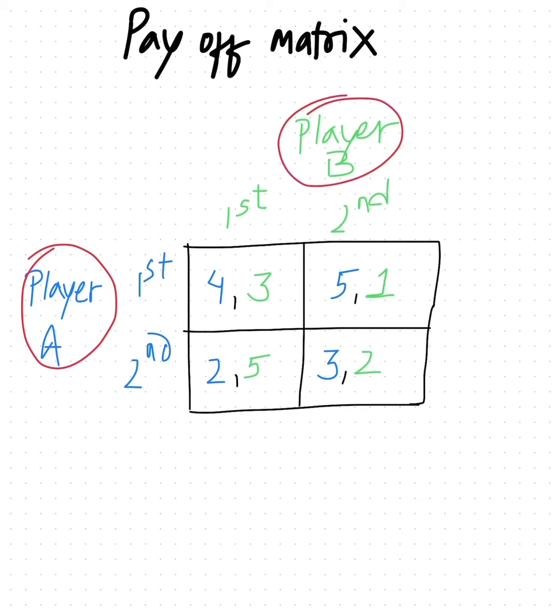We've got two players here: Player A and Player B. Both players have two strategies available to them. Player A has first and second strategy; likewise, Player B also has first and second strategy.